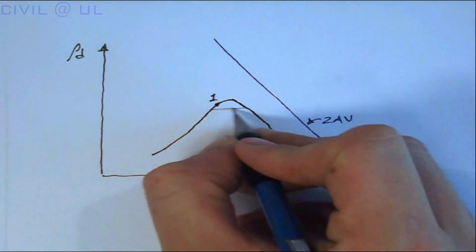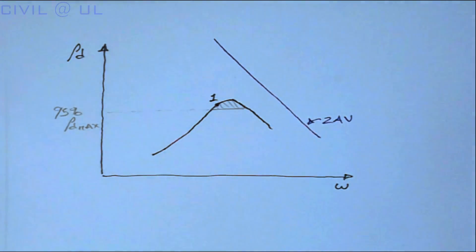If a soil is compacted dry of optimum, as shown at point 1, it exceeds, in this case, the minimum specified dry density of 95% of the maximum dry density.